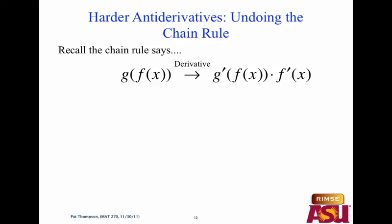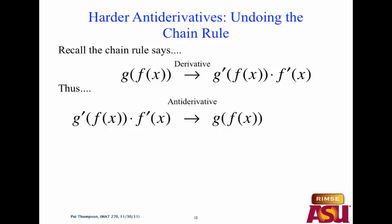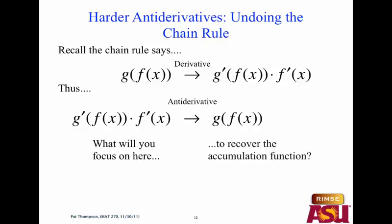Now we're doing antiderivatives. If we want to use the Fundamental Theorem to find the total change in quantity, we're going to need antiderivatives. So we'll be on the lookout for rate functions that look like g prime of f of x times f prime of x. What we want is the original quantity function: g of f of x. So the question is, what will you focus on in order to recover the quantity function?